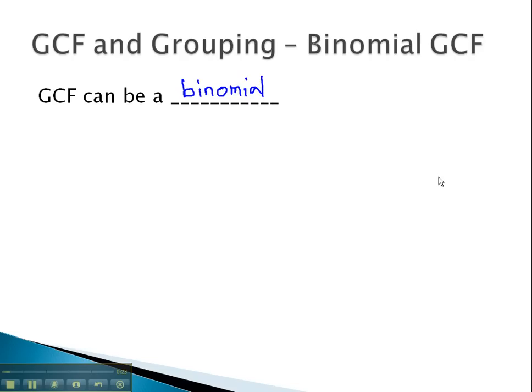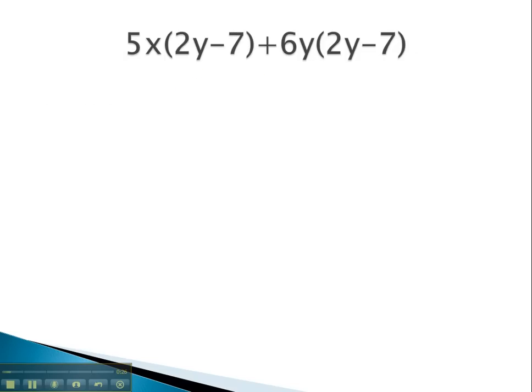For example, we will consider this problem. Notice, both parts, both halves, have this group or binomial 2y minus 7 in common. That is our greatest common factor.